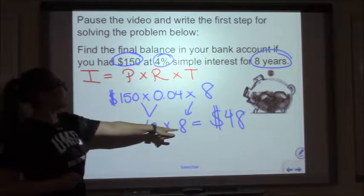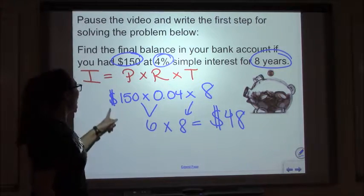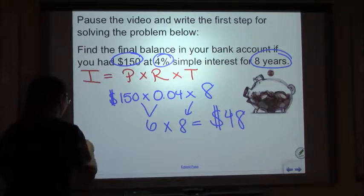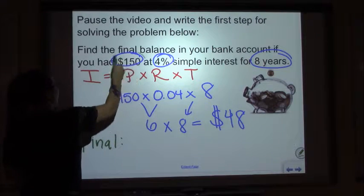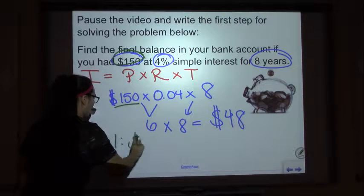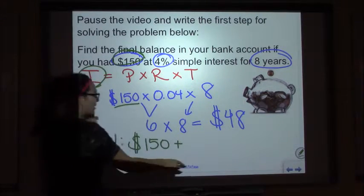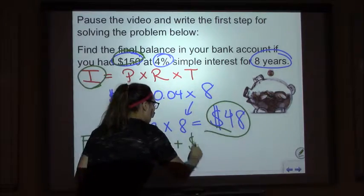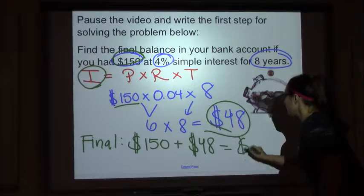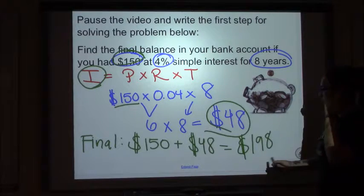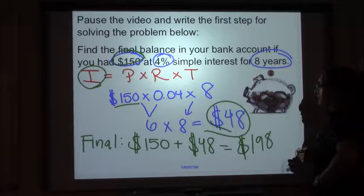So our interest is forty-eight dollars — that's how much we've made over eight years. It might not seem like a lot, but since we started off with $150, that's quite a bit. For the final balance, we take our base of $150 and add on our interest of $48. Our total is one hundred and ninety-eight dollars — that's how much is in our bank account after eight years.